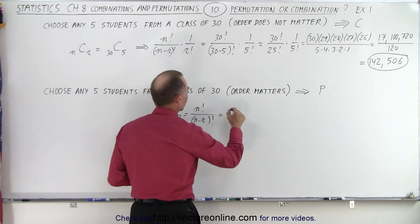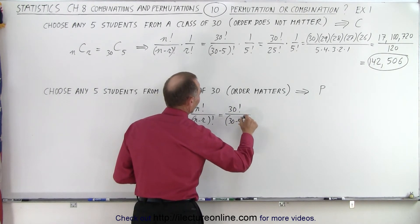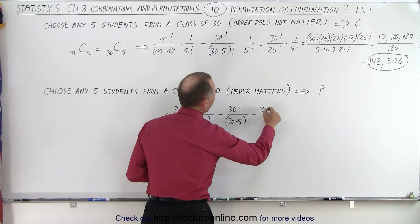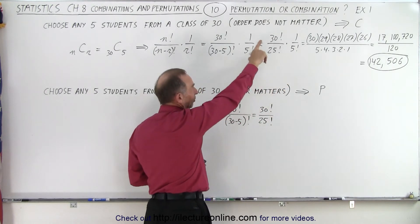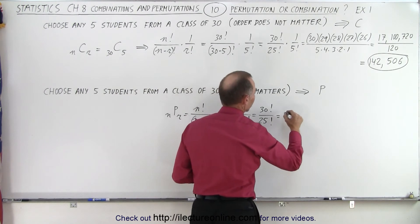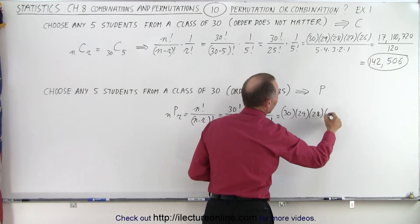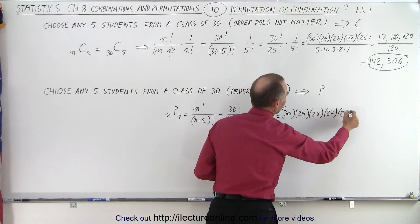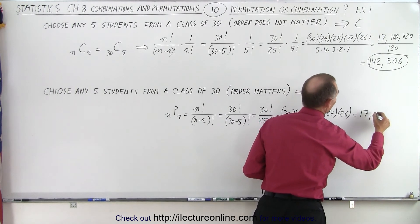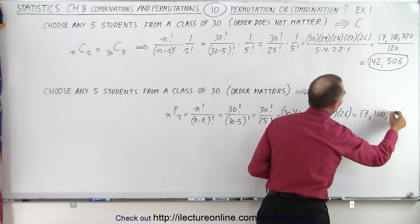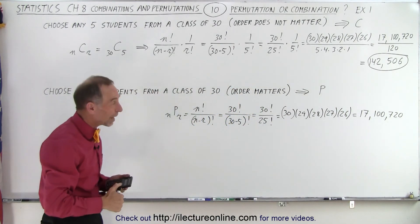So this is equal to 30 factorial divided by 30 minus 5 factorial, or 30 factorial divided by 25 factorial. Notice that's the same as the first part over there. So this would become 30 times 29 times 28 times 27 times 26, and that then becomes 17,100,720 different kind of permutations.